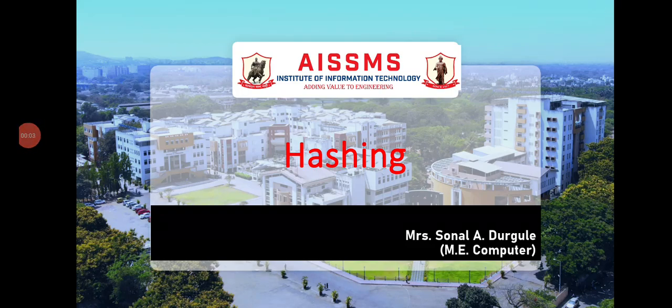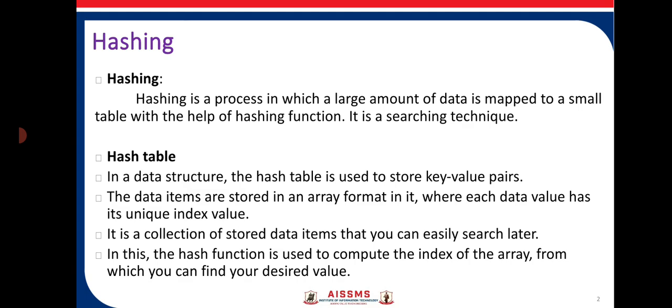In this chapter we are learning about hashing, which is based on data structures and algorithms. It is a technique to keep information in a compressed fashion. Hashing is a process in which a large amount of data is mapped to a small table with the help of a hashing function. It is a searching technique used to store large amounts of data in a compressed format for easy retrieval, easy storage, and easy manipulation of the data.